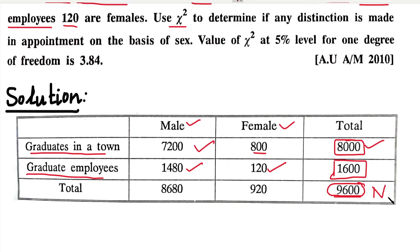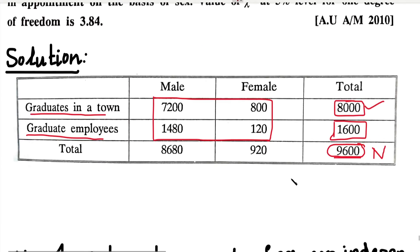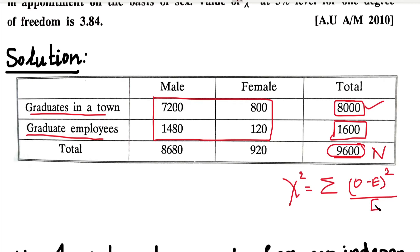In the table there is a 2x2 matrix formula for independence of attributes. The Chi-square formula is the summation of (O minus E) squared divided by E. For Chi-square, we use the observed frequency O and the expected frequency E. The four observed frequency values in the matrix are 7200, 800, 1480, and 120.